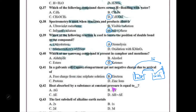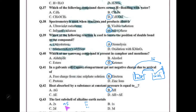Heat absorbed by a substance at constant pressure is equal to enthalpy. The last sub-shell of alkaline earth metals: alkaline earth metals are s-block elements, so their last sub-shell is s. Depending on the period, it could be 2s, 3s, 4s, or 5s. The question only gives 2s as an option, which is incomplete — it should say 'ns'. This question gives little information, but we select 2s.